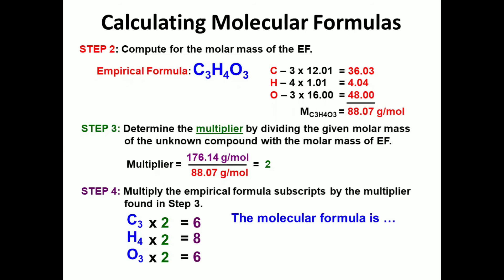then oxygen 6. And there you go. This will be our molecular formula for methyl acetate, C6H8O6. And we are done computing for molecular formula.